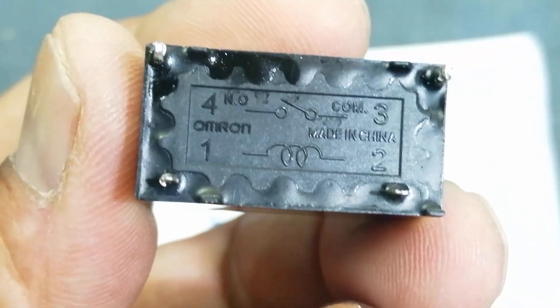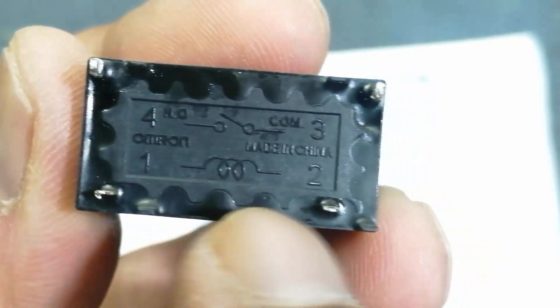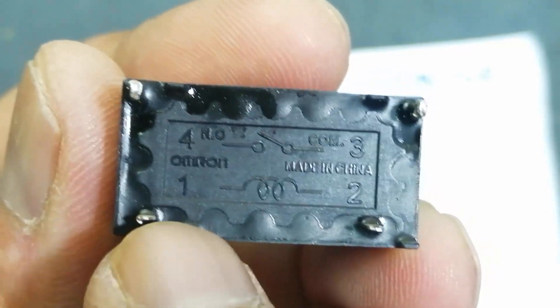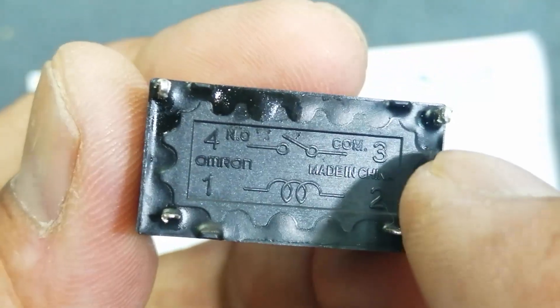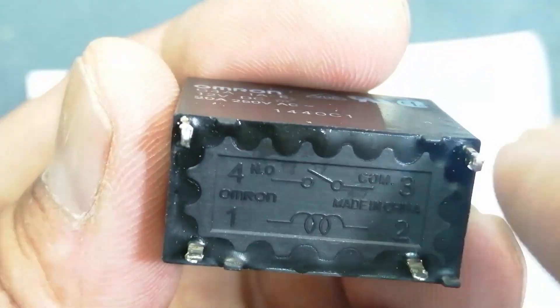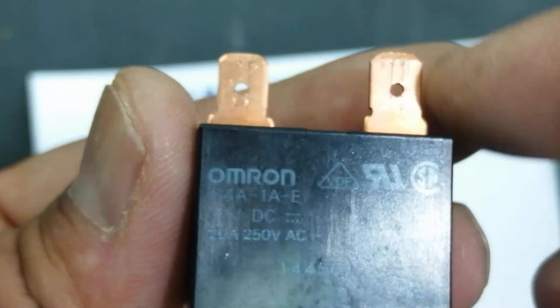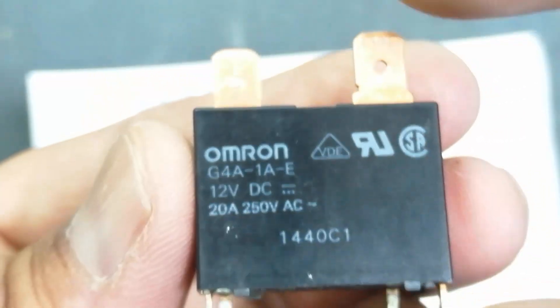If we see its footprint, pin number one and pin number two, it is coil. And pin number three and four, it is contact. This is pin number three and this is four.